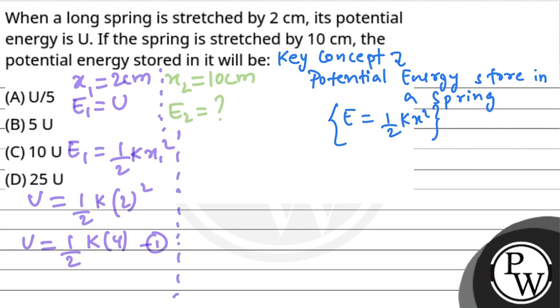Now for the second case, E₂ equals ½k(x₂)². The value of x₂ is 10, so 10 squared is 100. This gives us E₂ equals ½k(100), which is equation 2.